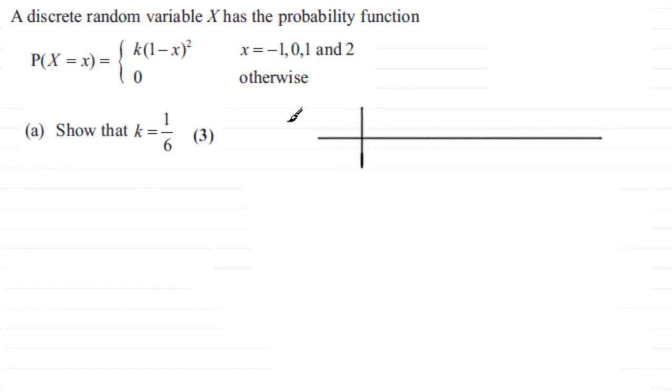So what would that probability distribution table look like? Well we tend to write the observed value, which is the small x here, the values that it can be. And that would be minus one, naught, one and two.